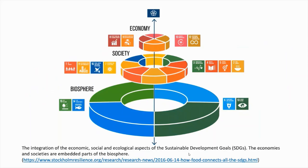The 17 Sustainable Development Goals integrate economic, social and ecological aspects. The goals related to biosphere are life on land, life below water, clean water and sanitation, and climate action. The goals related to society include no poverty, sustainable cities and communities, peace, justice and strong institutions, affordable and clean energy, good health and well-being, quality education, gender equality, and zero hunger. The goals related to economy are decent work and economic growth, industry innovation and infrastructure, reduced inequalities, and responsible consumption and production. The economies and societies are embedded parts of the biosphere.